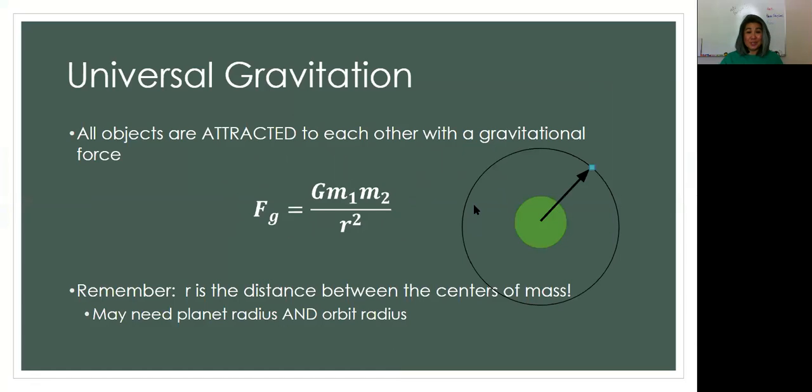So remember, all objects are attracted to each other with a gravitational force. And Newton came up with this equation for universal gravitation. The one thing I do need you to remember in this is that R is the distance between the center of masses.